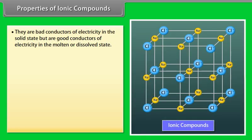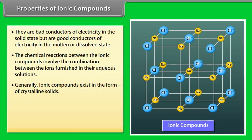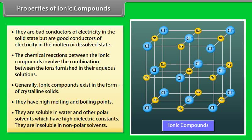Properties of ionic compounds: they are bad conductors of electricity in solid state but good conductors in molten or dissolved state. Chemical reactions between ionic compounds involve combination between ions in aqueous solutions — such reactions are called ionic reactions. Ionic compounds generally exist as crystalline solids with high melting and boiling points, due to strong electrostatic forces. They are soluble in water and other polar solvents with high dielectric constants, but insoluble in non-polar solvents.